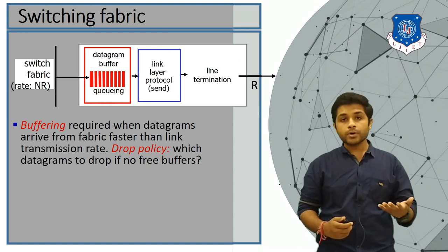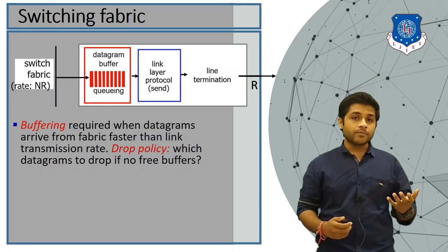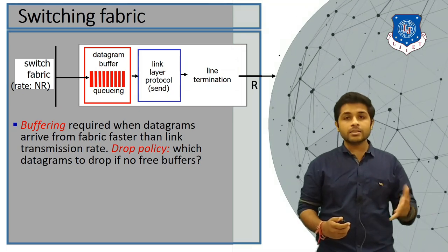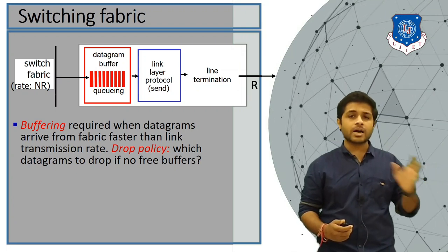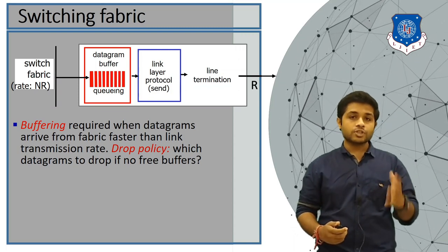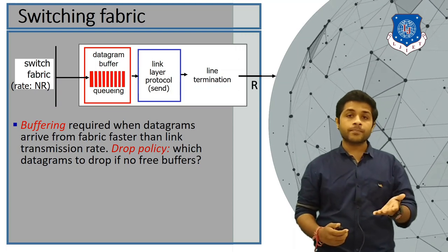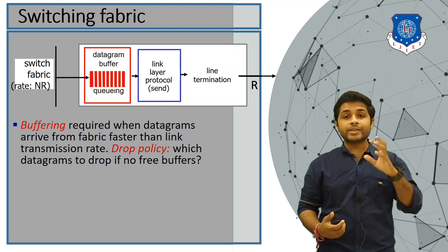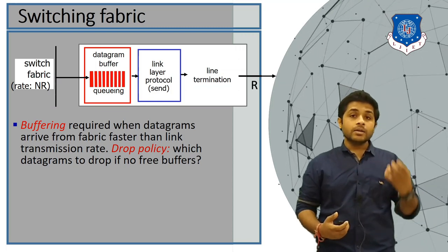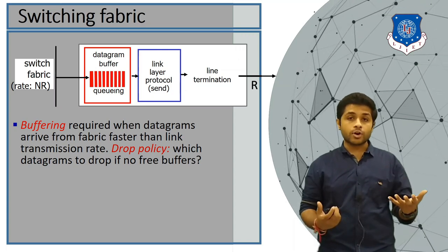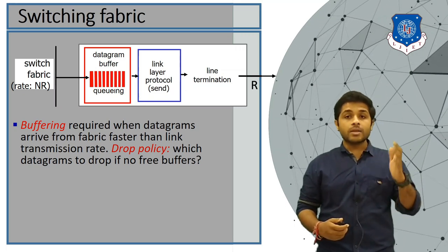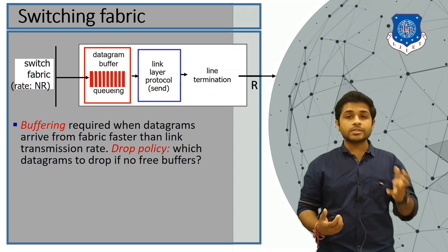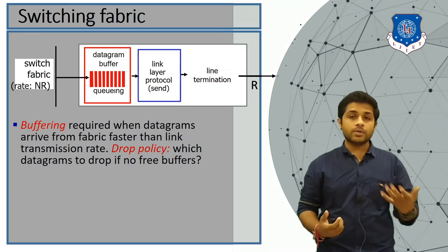Now let's see what's inside the output port. The first block is called the datagram buffer, the second is the link layer protocol, and the third is line termination. Packets received from the switching fabric are stored in the datagram buffer. They are then passed to the link layer, where MAC addresses are added along with extra data so the receiver can check for errors. In the line termination block, packets are converted into electromagnetic signals or voltage levels depending on whether the router is wireless or wired.